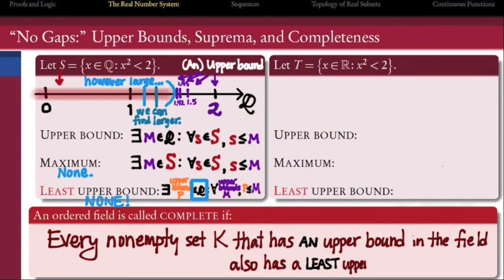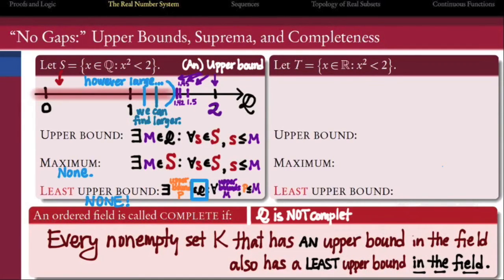We say that an ordered field is complete if every non-empty subset of k that has an upper bound in the field also has a least upper bound in the field. The rationals, as this example shows, are not complete. But indeed, one way of defining the real numbers is to declare that the real numbers consist of the suprema of all subsets of rational numbers that have finite upper bounds. And that would make, by definition, the real numbers complete.